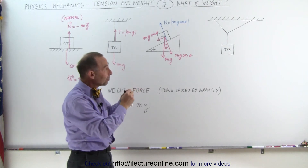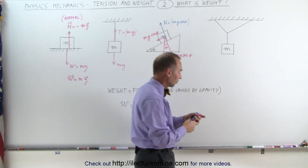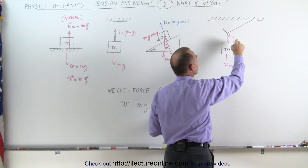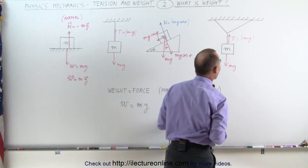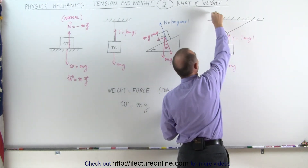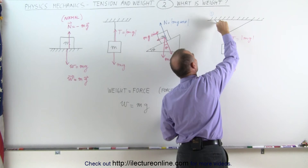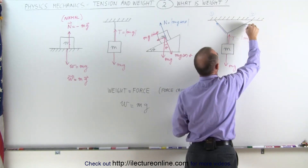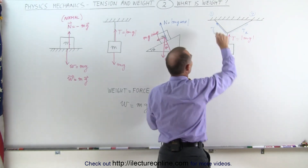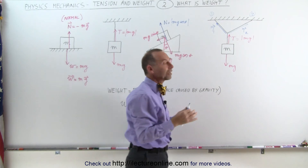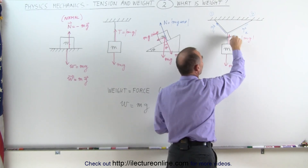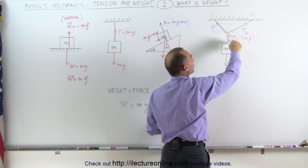Sometimes objects are hung from strings connected to the ceiling with multiple strings. We have the weight of the object pulling down — mg — and a tension T pulling back up, equal in magnitude to mg. That central string then connects to two other strings, tension T1 and tension T2, represented as vectors. These three vectors must cancel each other out since nothing is moving or accelerating.